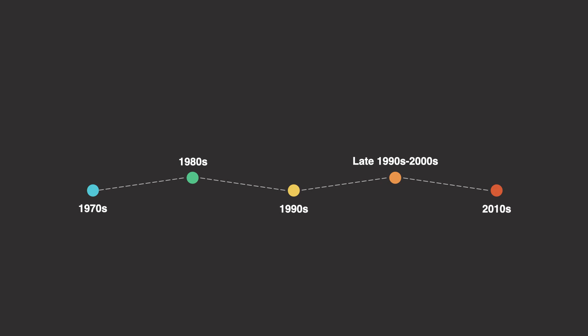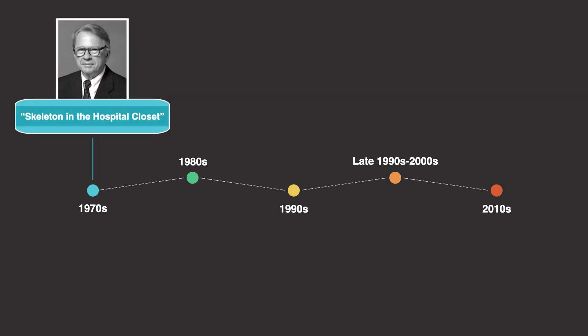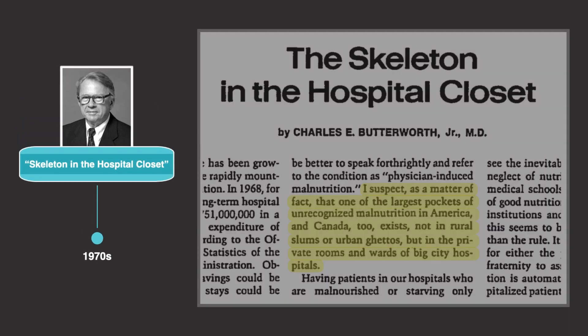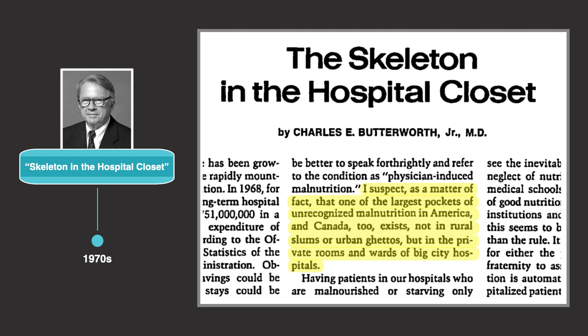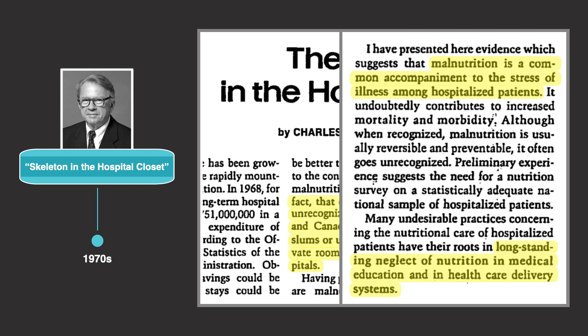Malnutrition among sick and hospitalized patients isn't a modern concept. However, it wasn't brought to the forefront of conversation in the medical community until 1974, with the publication of 'The Skeleton in the Hospital Closet' by Dr. Charles E. Butterworth. In this paper, Dr. Butterworth said: 'I suspect that one of the largest pockets of unrecognized malnutrition in America, and Canada too, exists not in rural slums or urban ghettos, but in the private rooms and wards of big city hospitals.' He also described malnutrition as a common accompaniment to the stress of illness among hospitalized patients, rooted in long-standing neglect of nutrition in medical education and in healthcare delivery systems.